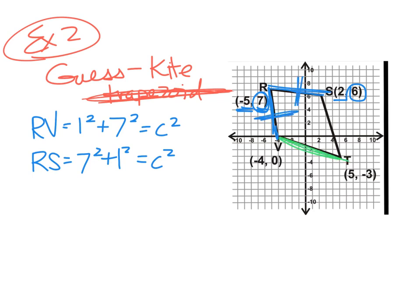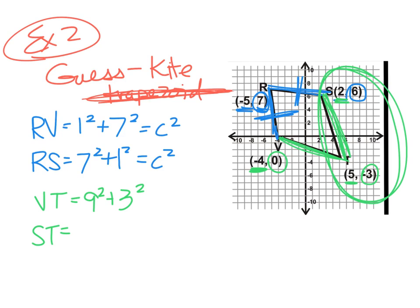I do need to check these last two sides. So I'm going to do that as well. So if I do V to T, I'm looking at negative four to five. That's going to be nine apart. So nine squared and zero to negative three is going to be three apart. So three squared. Okay, so now let me check this last side over here, which is S and T. So S, T, two and five are seven apart. So that's seven squared. And six and three are nine apart. Oh, not seven apart, y'all. Two and five are three apart. Two and five are three apart. Six and negative three are nine apart. So these are also equal to each other, which means this, in fact, is a kite.